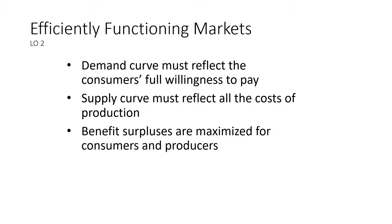In an efficiently functioning market, two things must happen. The demand curve must reflect the consumer's full willingness to pay for an item. On the supply side, the supply curve must reflect all the costs of production in order for it to be truly an efficiently functioning market — so there's no one getting anything for free, and all the costs, even pollution costs, would be accounted for when creating that supply curve. It's in this type of market that we say we maximize surpluses to consumers and producers.